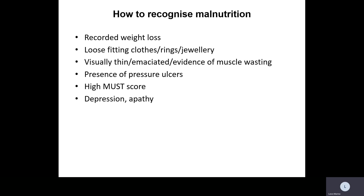How do we recognise malnutrition? In adults, we record their weight loss. Common things to ask individuals include: are their clothes more loose-fitting than usual, what about their rings or jewellery, do they look visually thin or emaciated, is there evidence of muscle wasting on their arms or legs, do they have pressure ulcers, do they have a high MUST score, and do they appear depressed or apathetic?